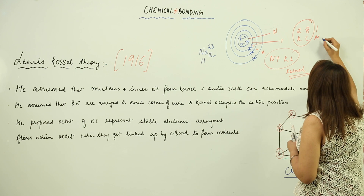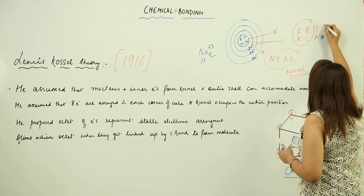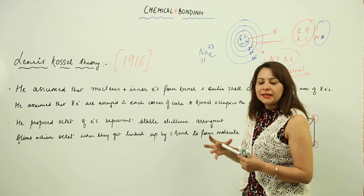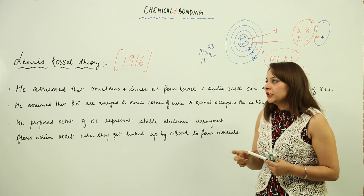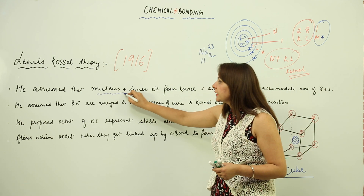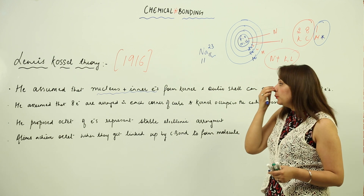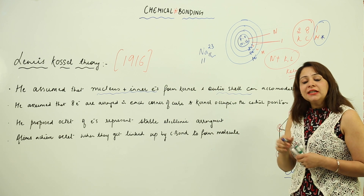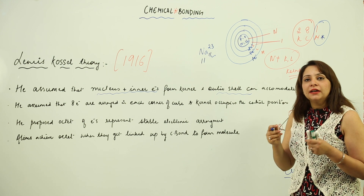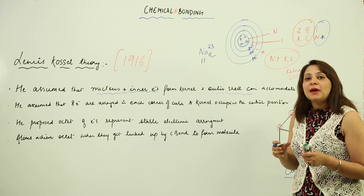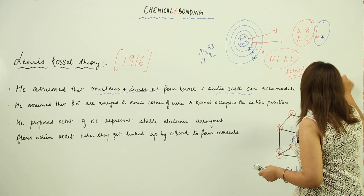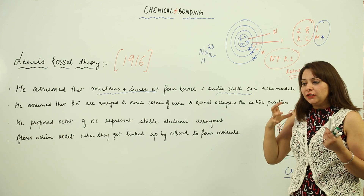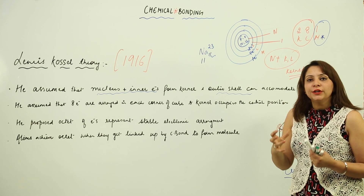Apart from the kernel, what we have is the outermost shell. So he said we can divide the atom into two portions: one is the nucleus and inner electrons (the kernel), and the other is the outer shell. He said the outer shell can accommodate a maximum of eight electrons.